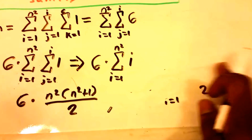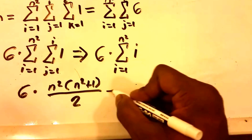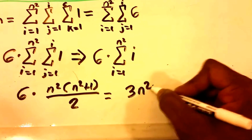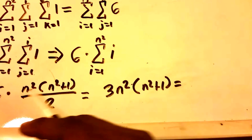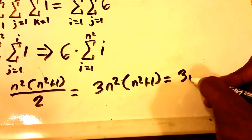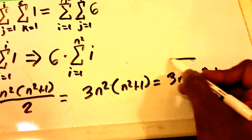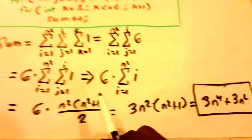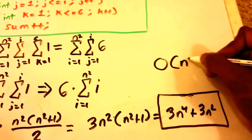Continuing, we simplify by dividing the 6 by 2 to get 3. So we get 3 n squared times (n squared plus 1), and then expanding that gives us 3n to the fourth plus 3n squared. This is what sum equals. And if you want to know the Big-O notation, this is Big-O of n to the power of 4.